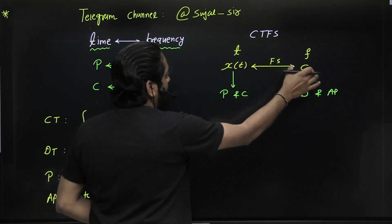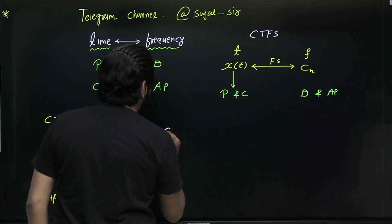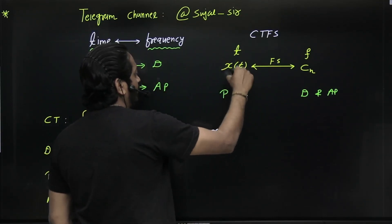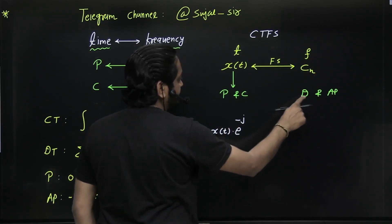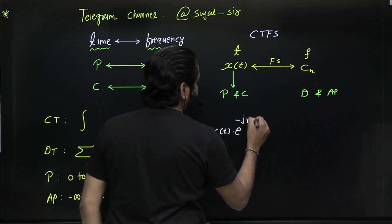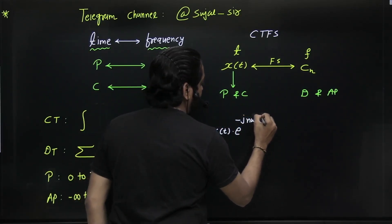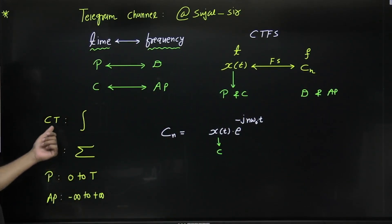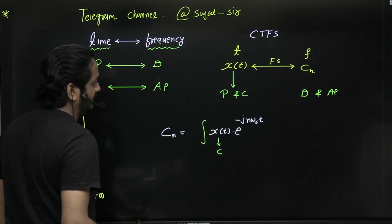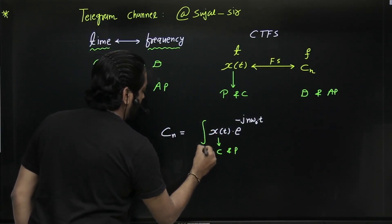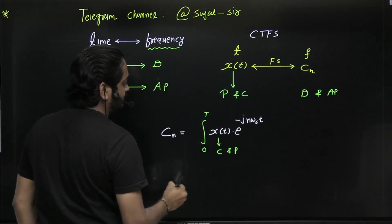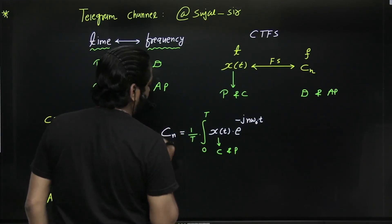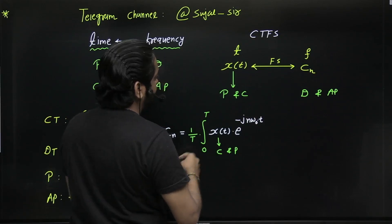To find Cn from X(t): Cn equals X(t) multiplied by e to the power of minus j·n·ω₀·t. Since X(t) is continuous, integration comes into picture. Since the signal is periodic, the integration is from 0 to T, or from −T/2 to +T/2, and you also multiply by 1/T because it is periodic.